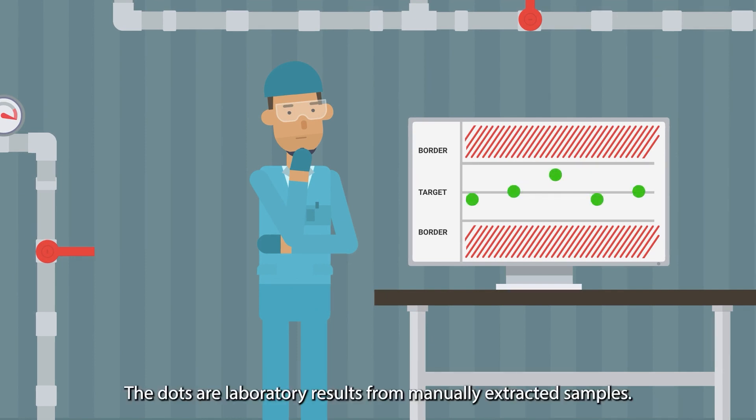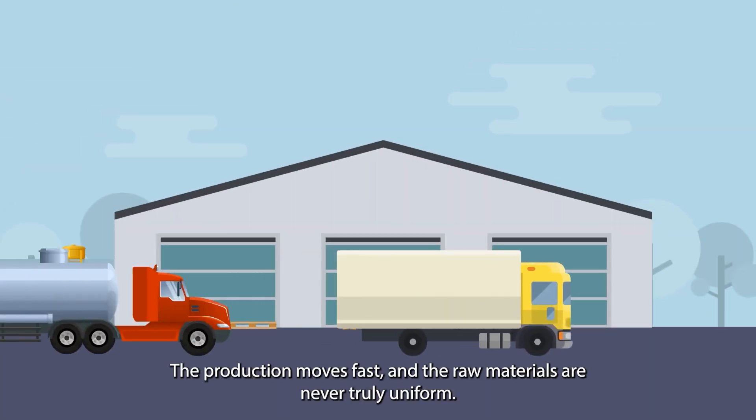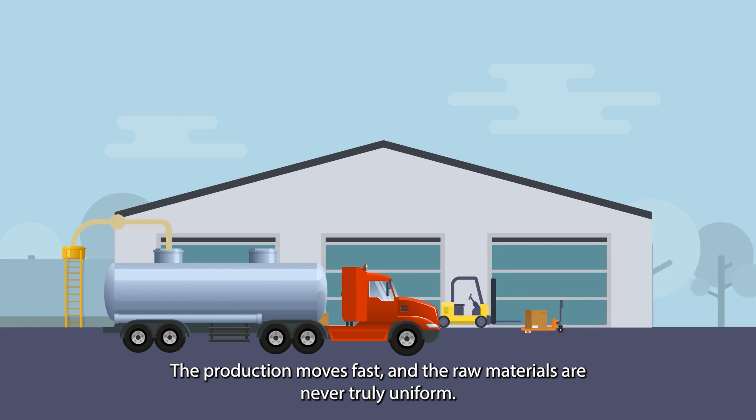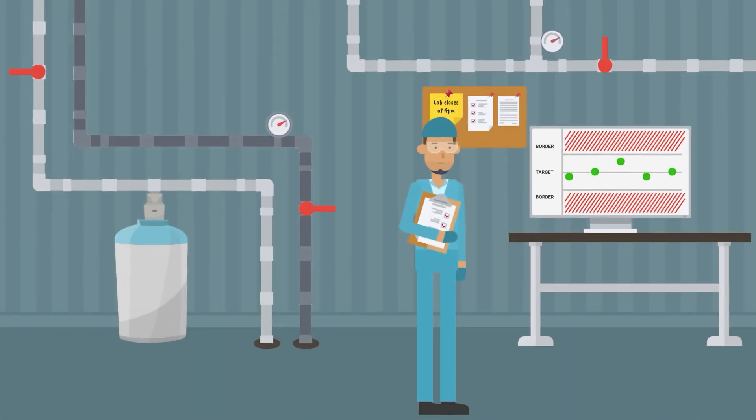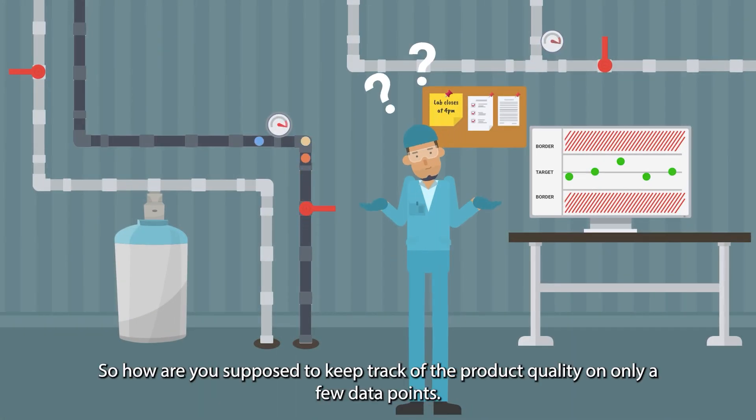The dots are laboratory results from manually extracted samples. The production moves fast, and the raw materials are never truly uniform. So how are you supposed to keep track of the product quality on only a few data points?